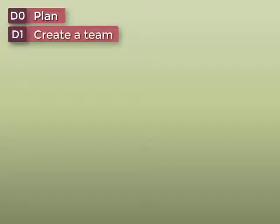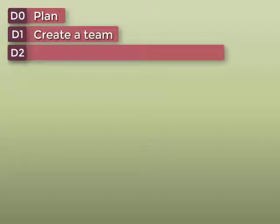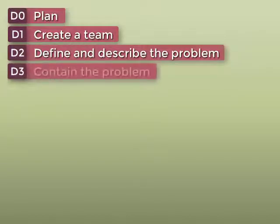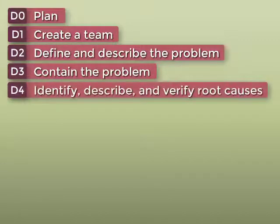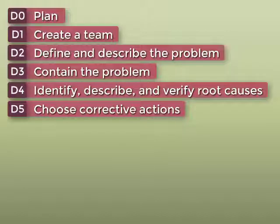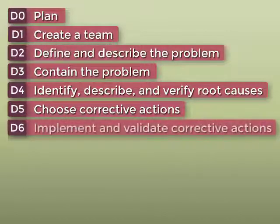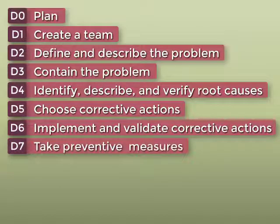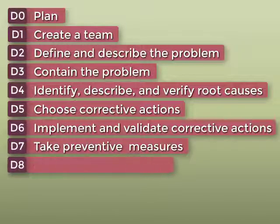That initial step or D0 is plan. The next step D1 is to create a team. D2 is defining and describing the problem. The third discipline or D3 is to contain the problem. D4 is to identify, describe, and verify the root cause or root causes. D5 is to choose appropriate corrective actions. Then D6 is to implement and validate corrective actions. D7 is to take the preventive measures and then finally D8 is to congratulate your team.